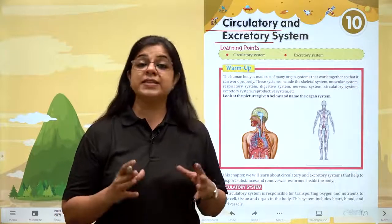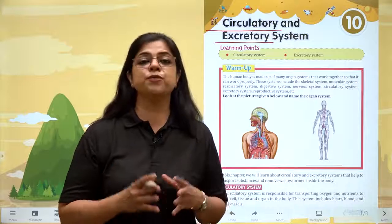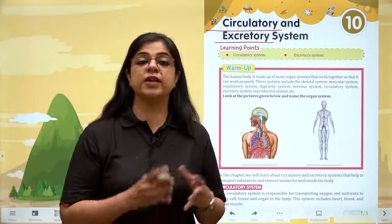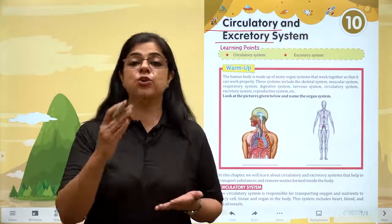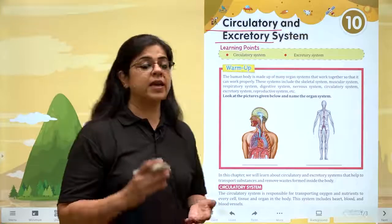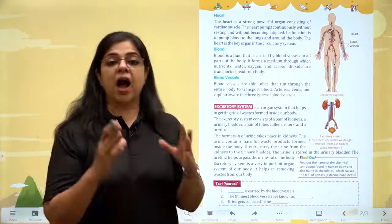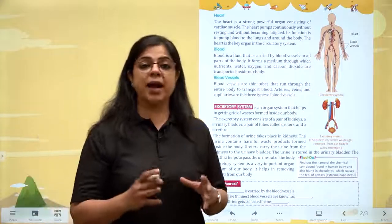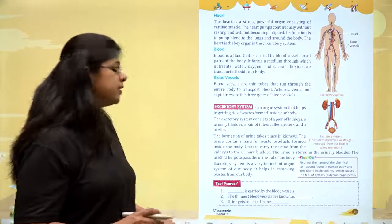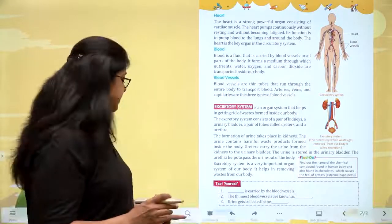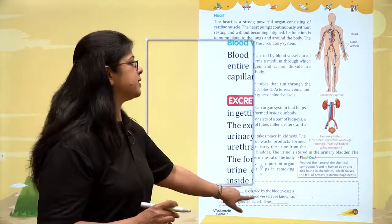The circulatory system is responsible for transporting oxygen, blood, and nutrients to all the parts of the body. This system is made up of the heart, blood, and blood vessels. Let us take a closer look at the system.